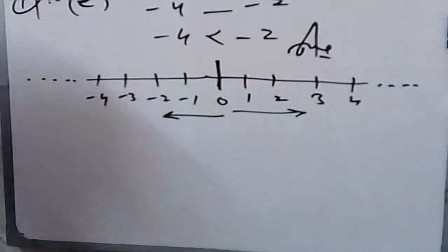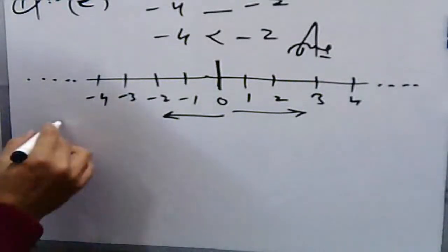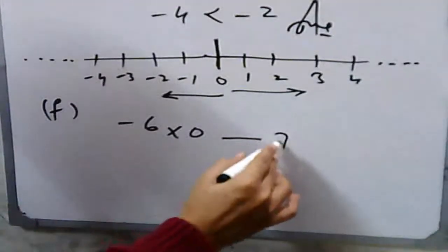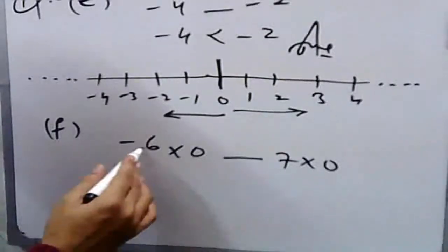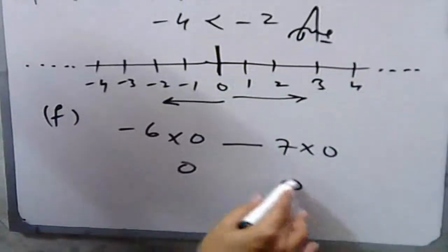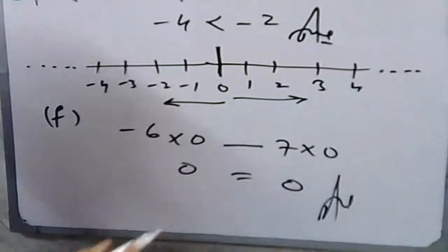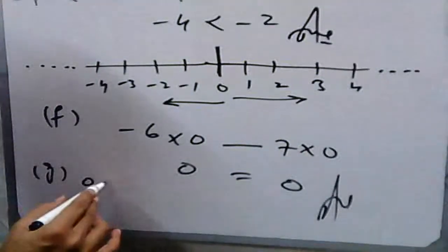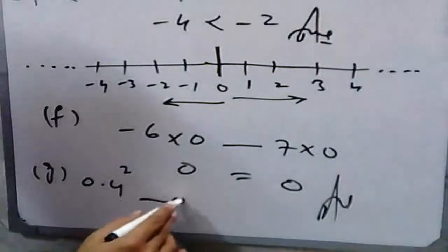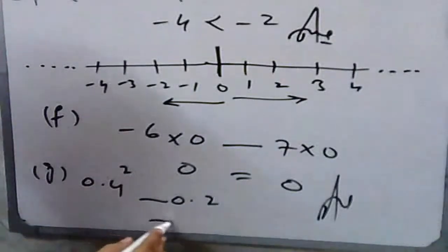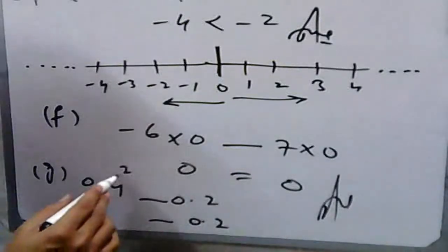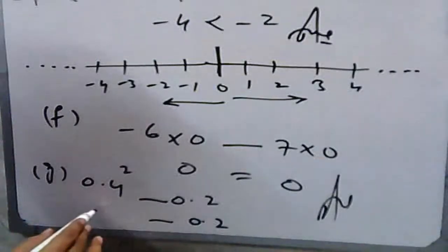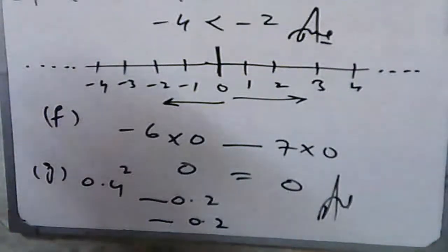In part f: any term multiplied by zero is also equal to zero, so both sides give zero — put the equality sign. In part g: 0.4² dash 0.2. Four times four is sixteen, so 0.4 squared equals 0.16.